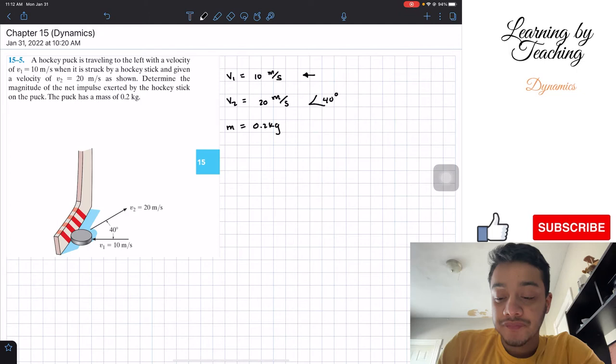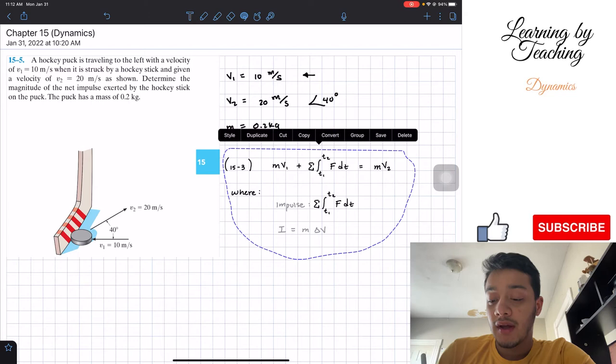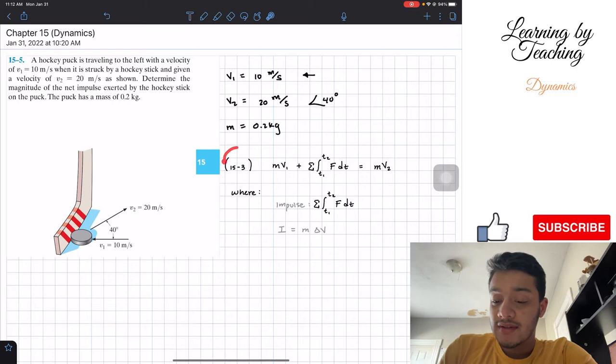In order to solve this problem, we need to find the net impulse. In this chapter they are introducing the linear momentum and impulse, the conservation of linear momentum and impulse, where basically it is this big equation. However, in this case we need to know what impulse means. The impulse is this entire summatory of the integral.